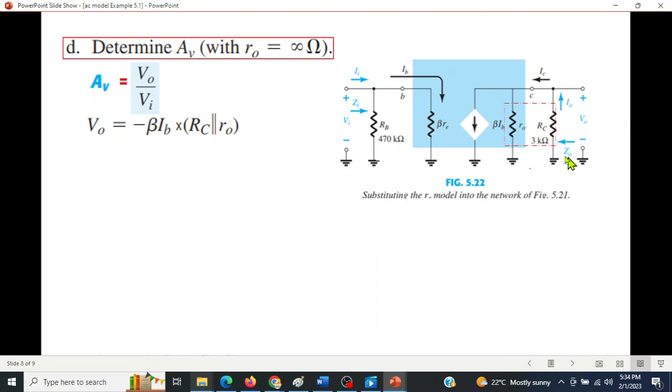So -βI_B × (r_o || R_C). What is I_B? From here you can see I_B = v_i / (βr_e). Plugging in the value of I_B, then solving, if you bring v_i on this side, beta cancels. So v_o / v_i = -(R_C || r_o) / r_e. This is our gain A_v.